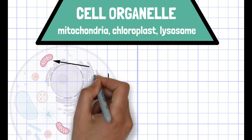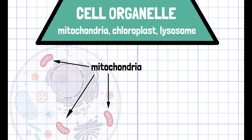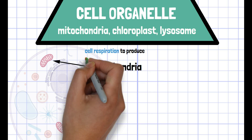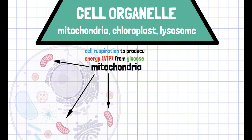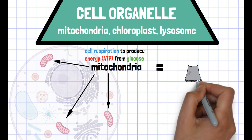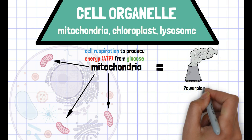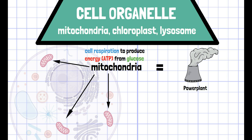Mitochondria is a double membrane organelle that is located around the nucleus. The main function of mitochondria is to undergo cellular respiration to produce energy using glucose. Mitochondria is like a power plant of the cell since it provides energy called ATP.